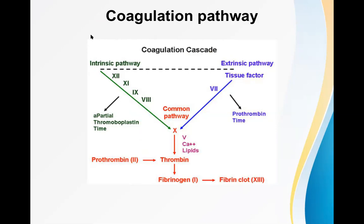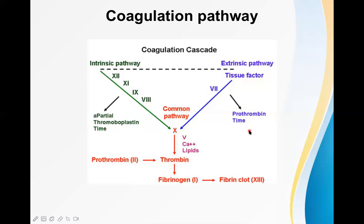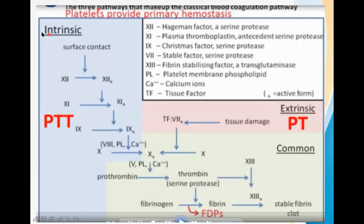On the other hand, there is the extrinsic pathway. Tissue factor starts that pathway, then factor 7, which joins the common pathway. One very important exam point is how we measure the function of these pathways: partial thromboplastin time (PTT) for the intrinsic pathway, and prothrombin time (PT) for the extrinsic pathway.